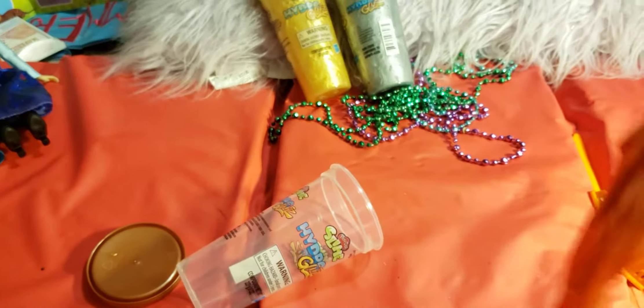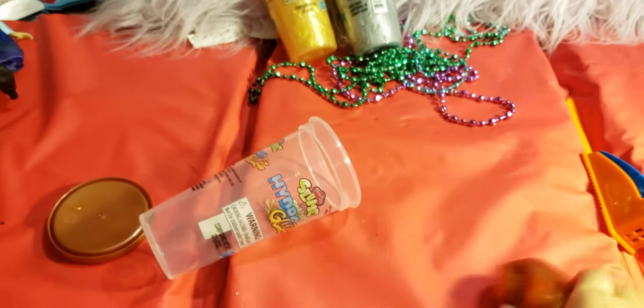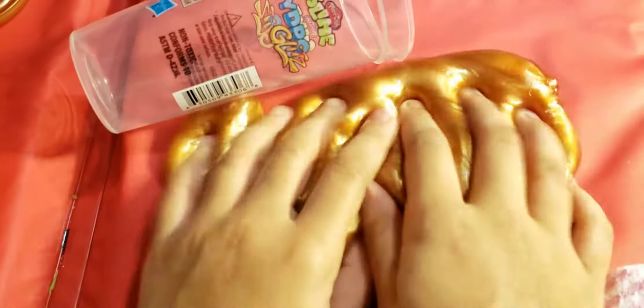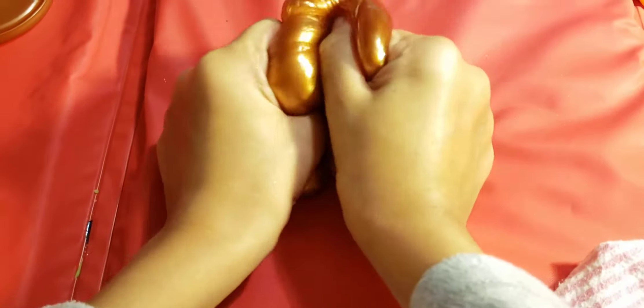Everyone, welcome back. Today we'll be doing another slime review. In my previous video we used a golden hydro glitz slime and a silver hydro glitz slime. In this slime review we'll be using a bronze hydro glitz slime. We have Anna and Elsa watching us. You probably already saw them in the previous video.